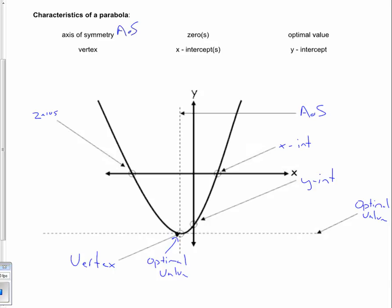Again, the optimum value indicates that there is no other value of y that goes below that particular point, and that always happens at the vertex.